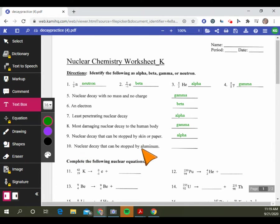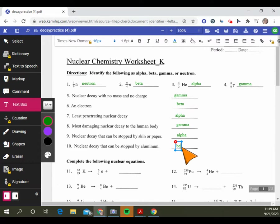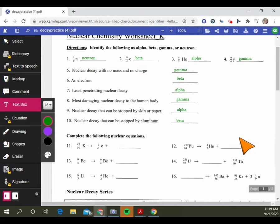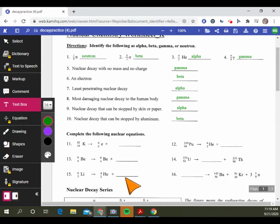Nuclear decay that can be stopped by skin or paper is alpha decay because the particle itself is so large. Nuclear decay that can be stopped by aluminum is beta decay. Let's work through some of these equations and you'll do some on your own.